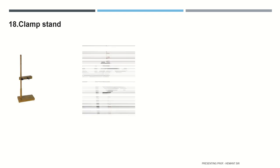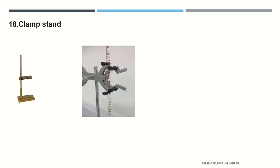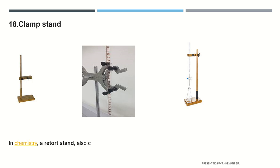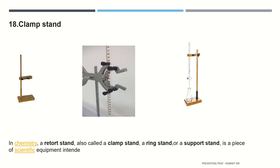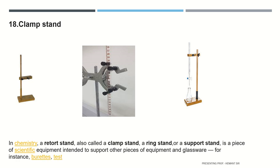A clamp stand may be available in wooden form as well as metal form. In chemistry, a retort stand — also called a clamp stand, ring stand, or support stand — is a piece of scientific equipment intended to support other pieces of equipment and glassware, for instance burettes, test tubes, and flasks.